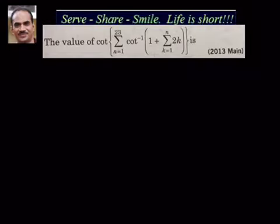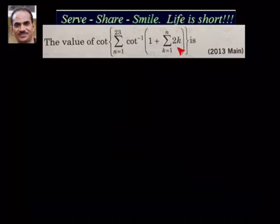Hello friends, welcome back, hearty welcome to you. Let's look at this problem: the value of cot of sigma n equal to 1 to 23, cot inverse of 1 plus sigma k equal to 1 to n of 2k, is equal to how much? Our approach to solve this problem is to start from inner to outer — first simplify the inner expression, then apply the cot inverse formula, apply sigma, and most terms will cancel to give the answer.